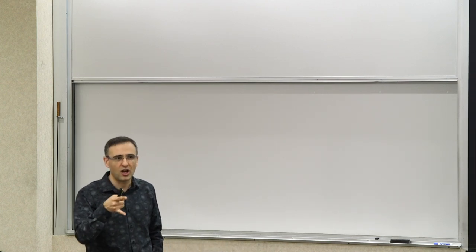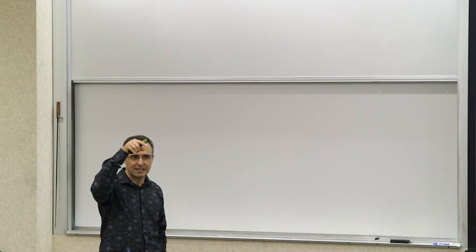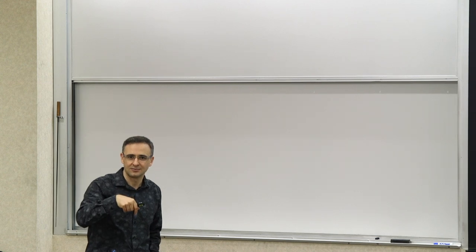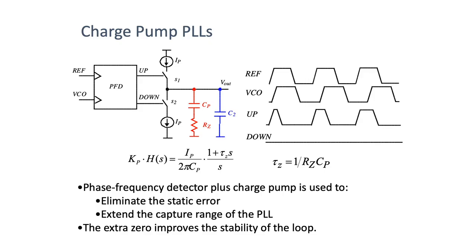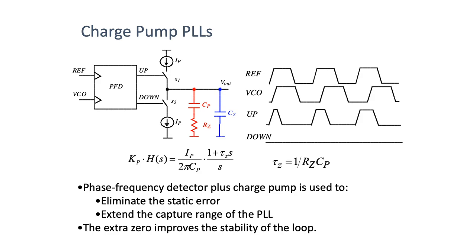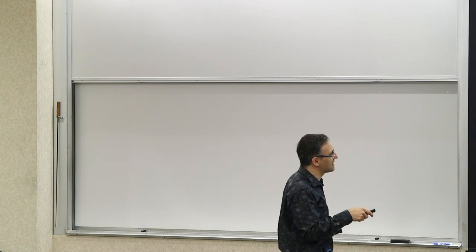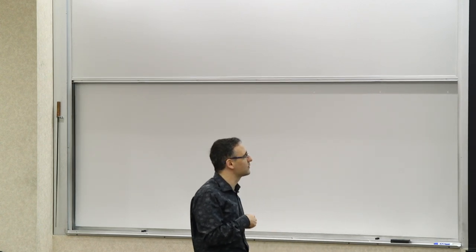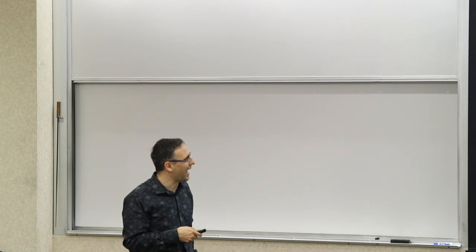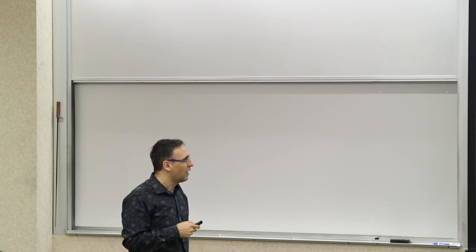Combining these things, K_p times H(s) overall would be the current I_p divided by C_p, the capacitor. By introducing a resistor R_z in series with the capacitor, we can introduce a zero in the transfer function — this is the standard technique of using a shunt R_z in series. Once you introduce that resistor, you can introduce a zero that's useful in compensating the loop and adjusting its properties, with τ_z = 1/(R_z · C_p).